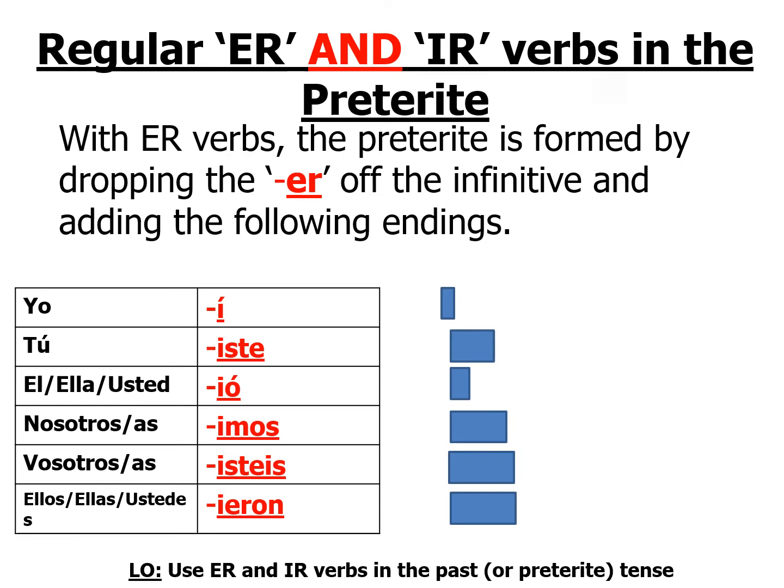For the I pronoun, yo, you add í. For the you pronoun, tú, you add iste. For the él and ella pronoun — he, she — you add ió. For the we pronoun, nosotros, you add imos. For the you plural pronoun, vosotros, you add isteis. And for the they pronoun, ellos, ellas, you add ieron.